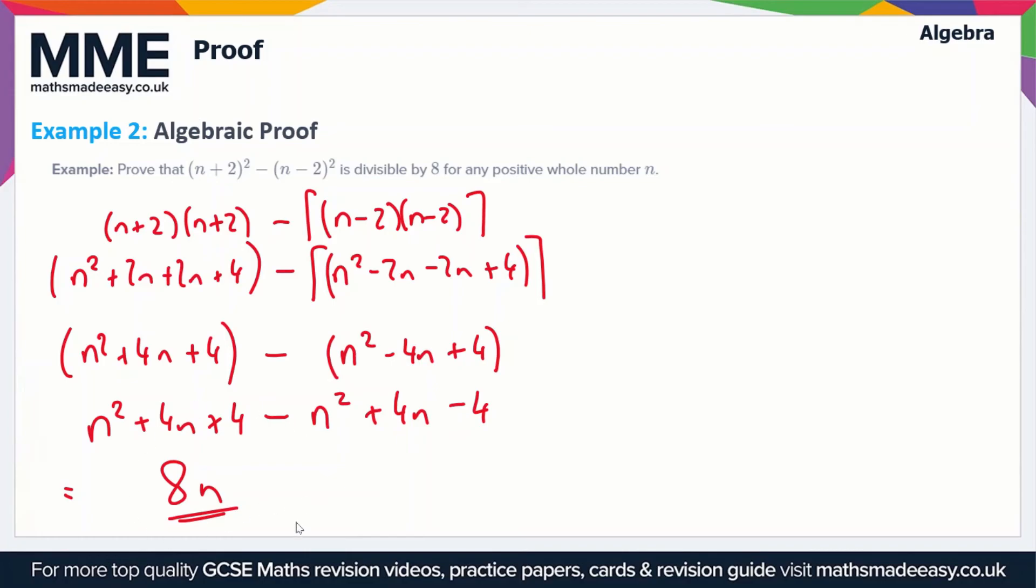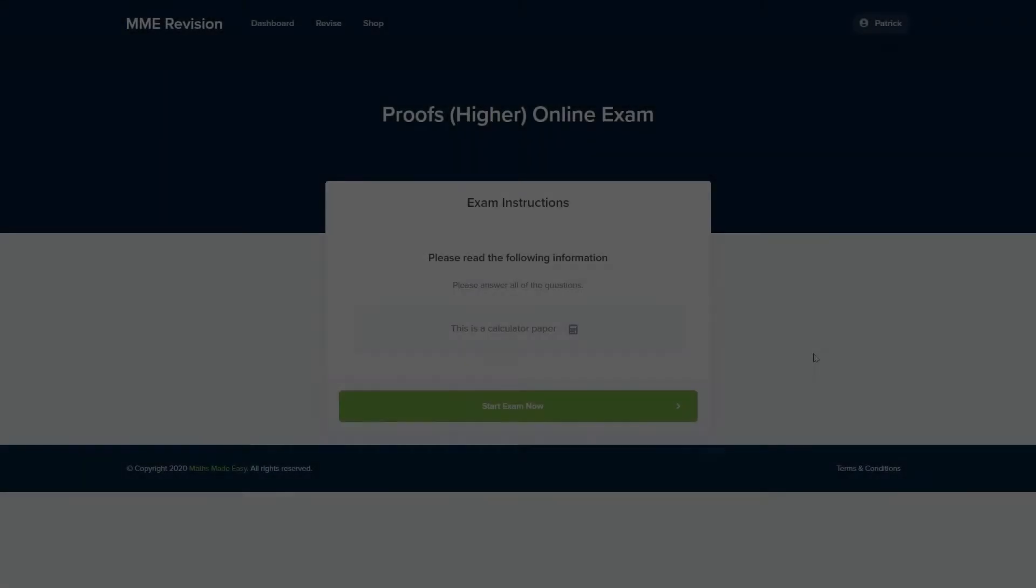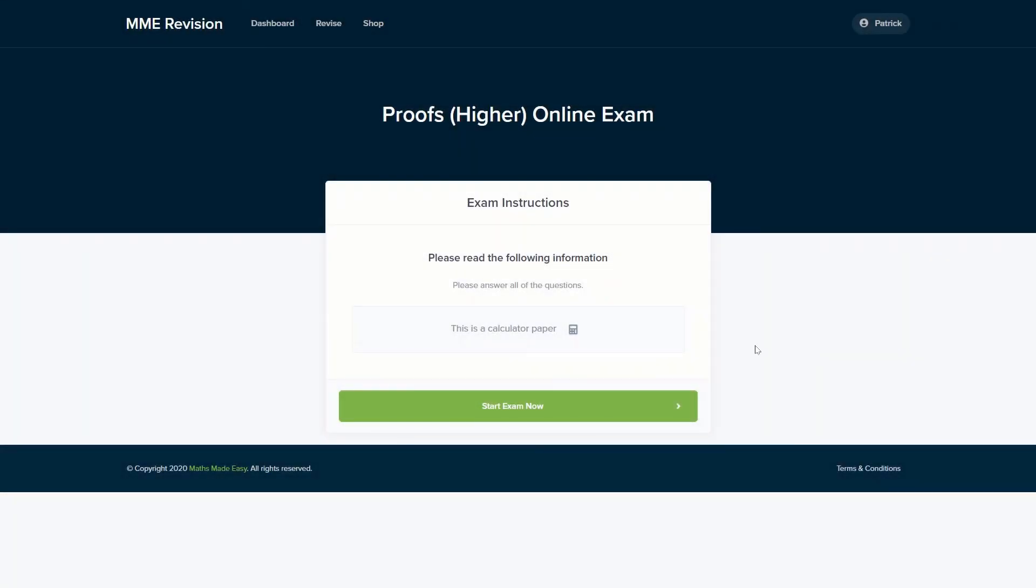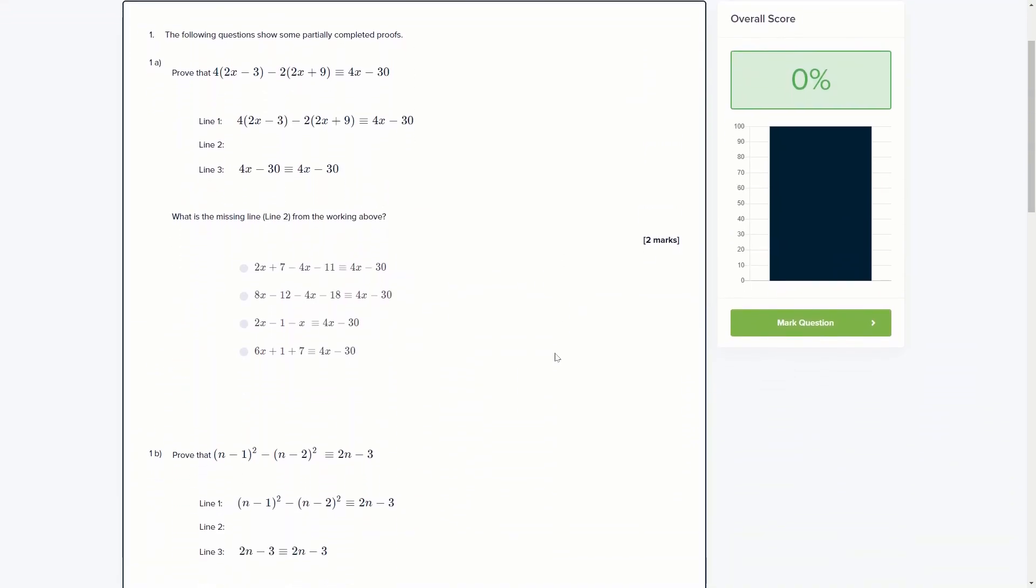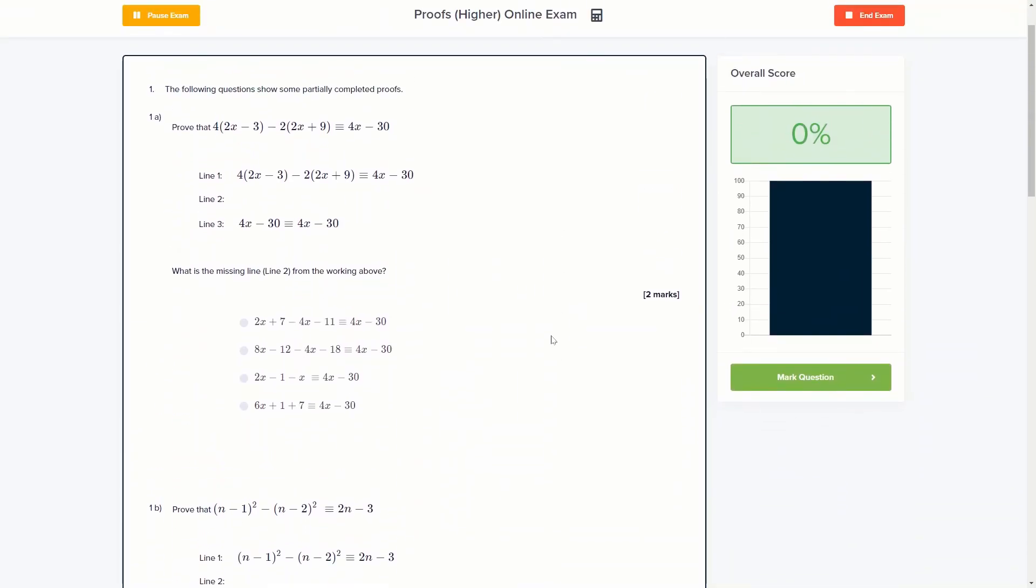If you want to practice some proof exam-style questions, you can do so with our online exam. This is available through our revision platform, where you'll find loads of different questions to have a go at, all of which you'll get instant feedback on so you can keep track of your progress and find out what you need to do to improve. If this is something you're interested in, you can click the link below and it will take you straight there.